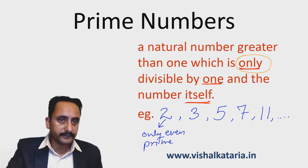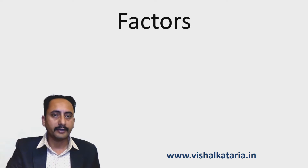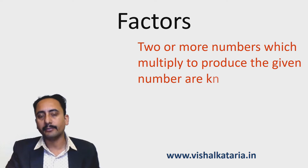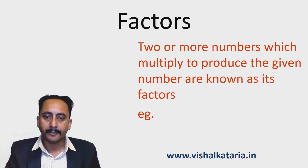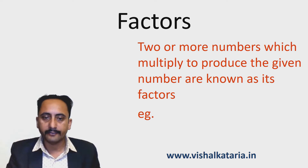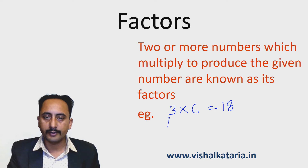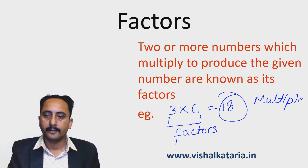Next is factors. What is meant by a factor of a number? Two or more numbers which multiply to produce a given number — those numbers are known as factors of a given number. For example, if I multiply 3 with 6 I will get 18, which means 3 and 6 are factors of 18, and 18 is a multiple of 3 and 6.